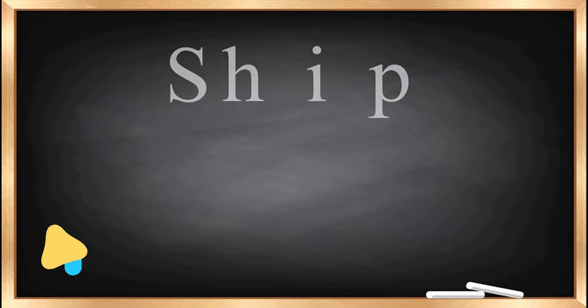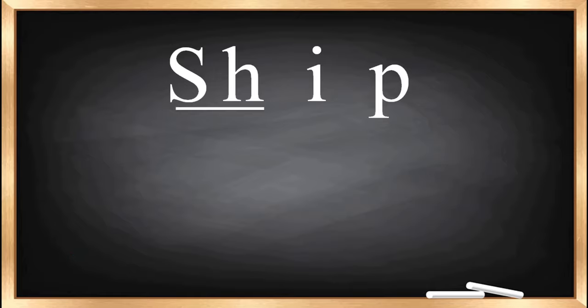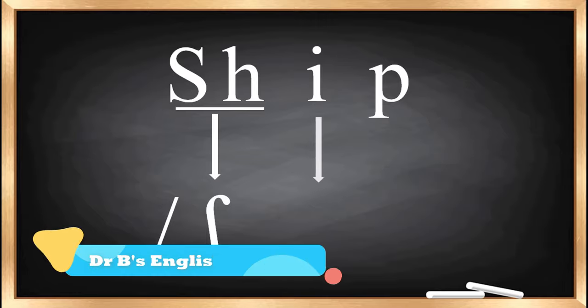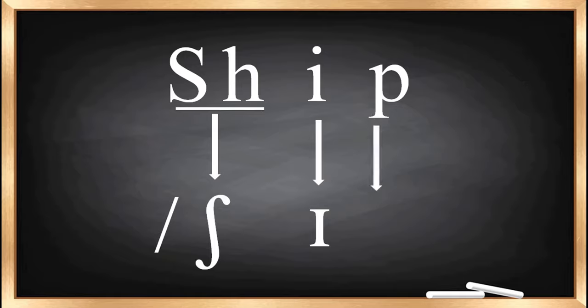The next word is 'ship'. Dear friends, here the letters S and H together produce only one sound: /ʃ/. This is the way you transcribe the sound /ʃ/. Then I gives /ɪ/, and P gives /p/. So the transcription of 'ship' is /ʃɪp/.